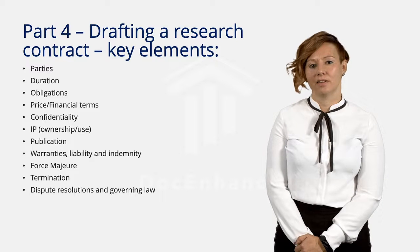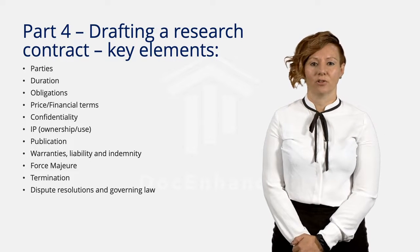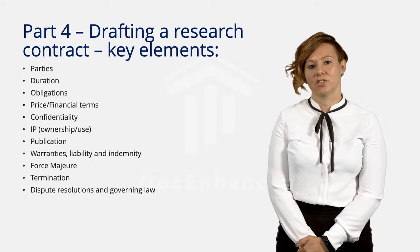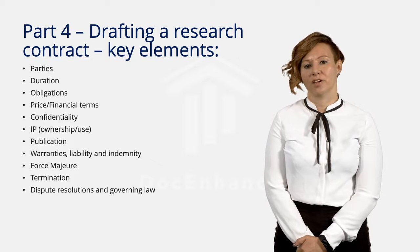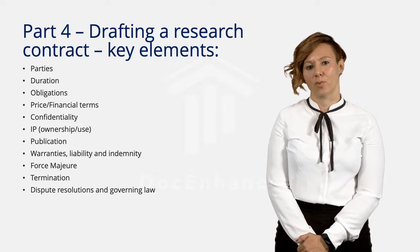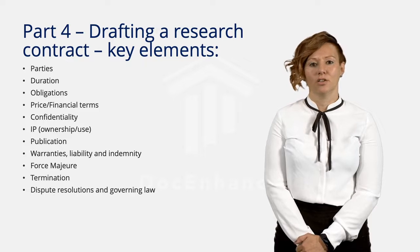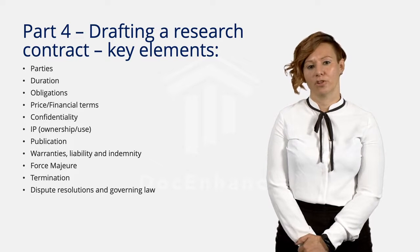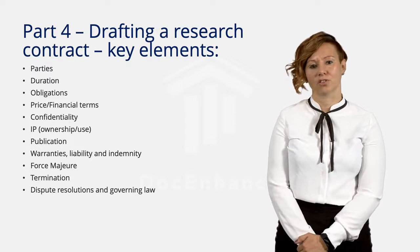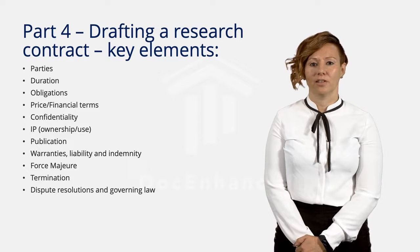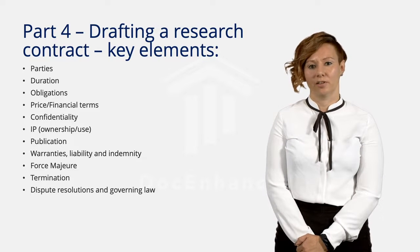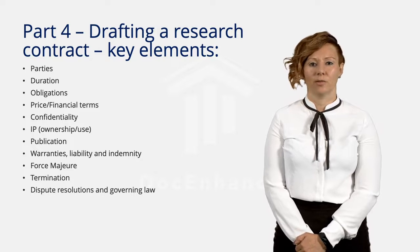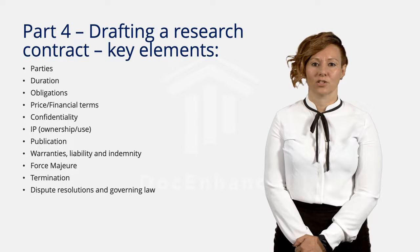Warranties, liability, and indemnity are ways to identify and control risk in the project. As an example, the university may not be willing to give any warranty that the results can be used in a specific way. You should also include provisions that the university cannot be held liable for the other party's use of the results. A way to limit liability is to avoid unlimited liability by putting a financial cap on the liability, or exclude liability for indirect and consequential loss.